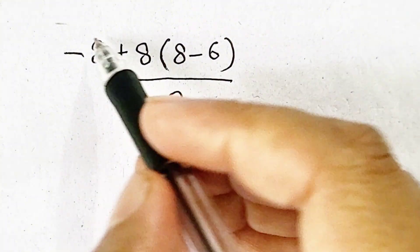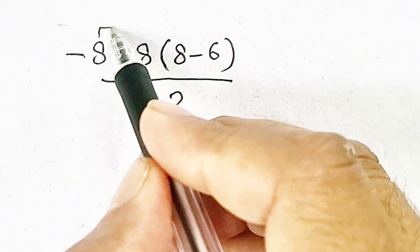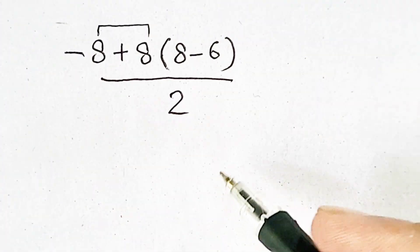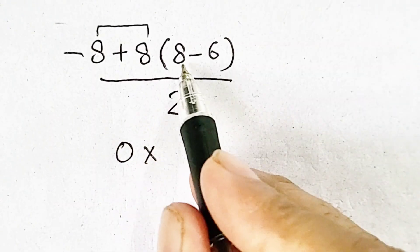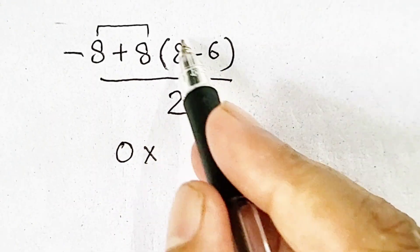Generally, people do this question in the way that minus 8 plus 8 will be equal to 0 times 8 minus 6.